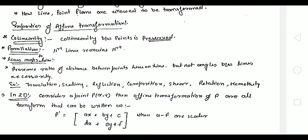So these three things must be preserved: collinearity, parallelism, and lines map to lines. What are the examples — what types of transformations can we use in affine? As you know from 2D transformation: translation, scaling, reflection, composite (two or more transformations used simultaneously), shearing, and rotation.